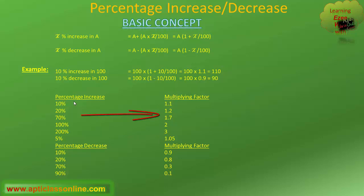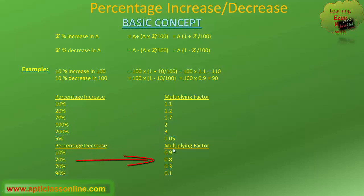For a particular percentage increase there is a corresponding multiplying factor with which we can calculate the percentage increase of any value. For example, to calculate 10 percent increase in any value we multiply that value by 1.1, as 1.1 is the multiplying factor for 10 percent increase. Similarly, for 10 percent decrease we multiply the initial value by 0.9, the multiplying factor for 10 percent decrease, to get the final value.